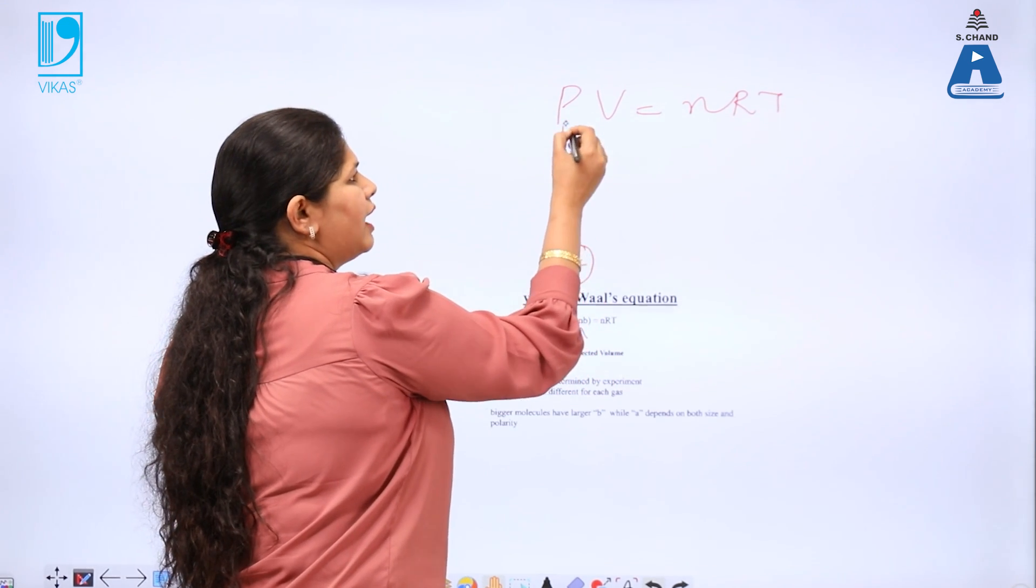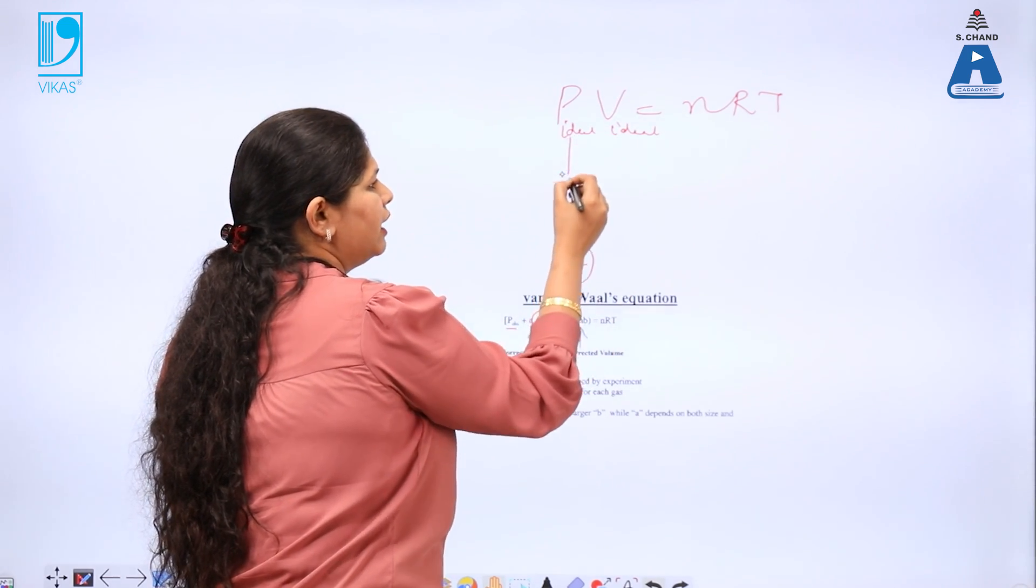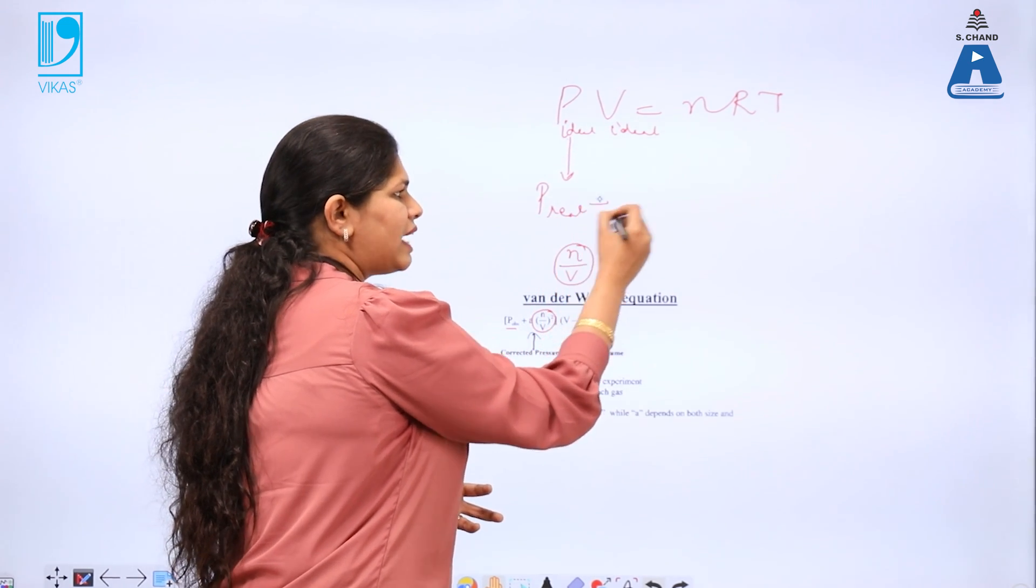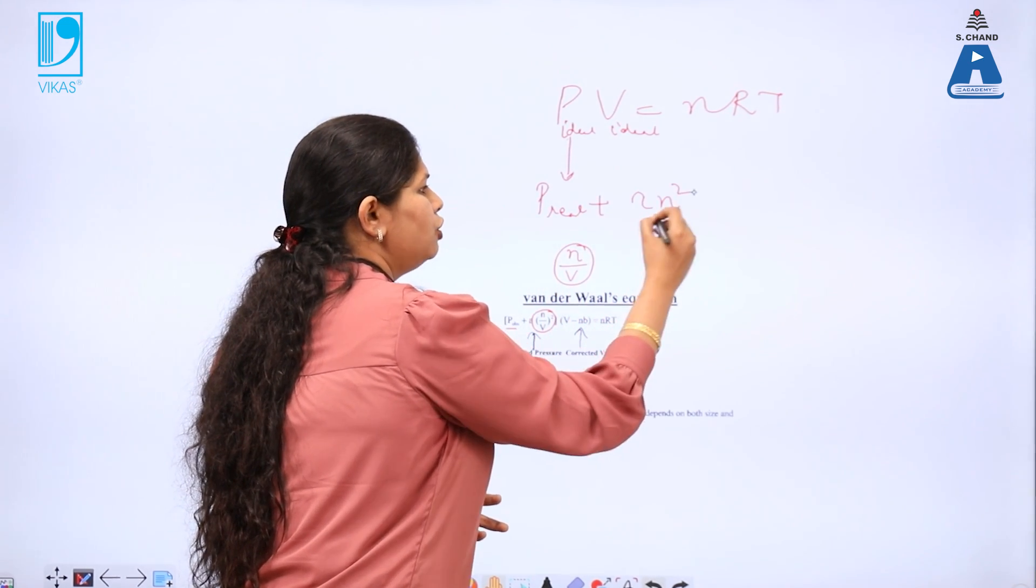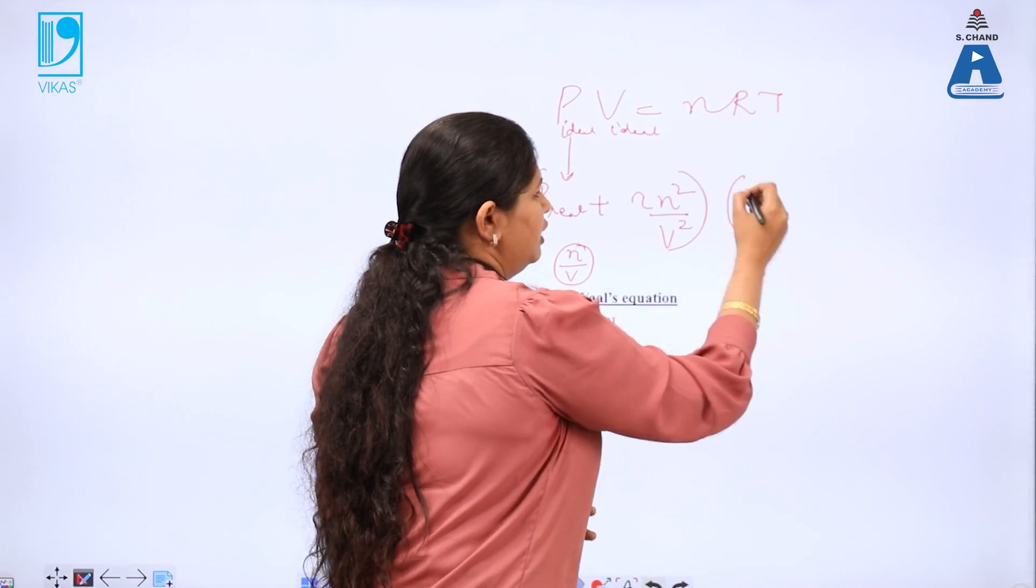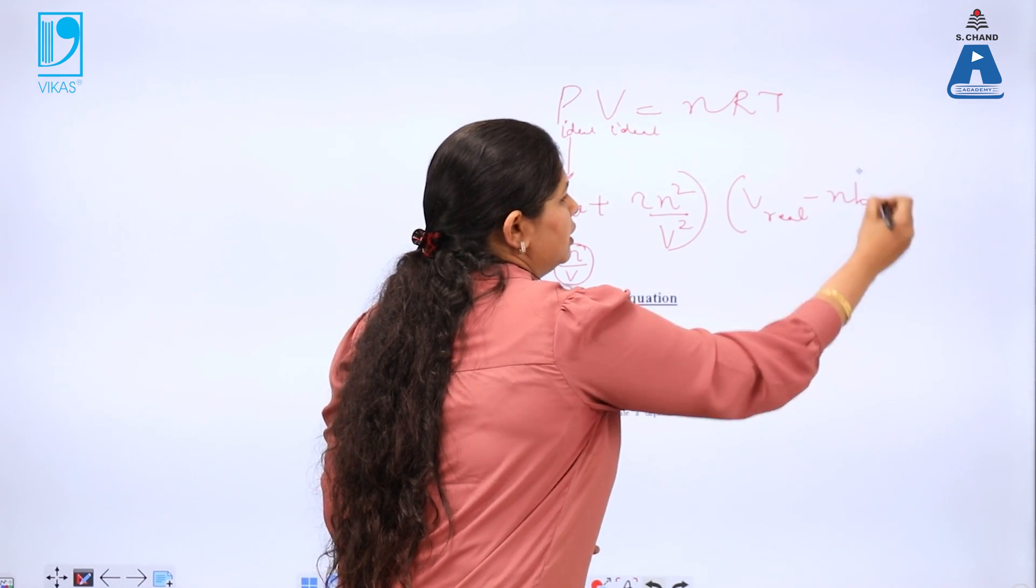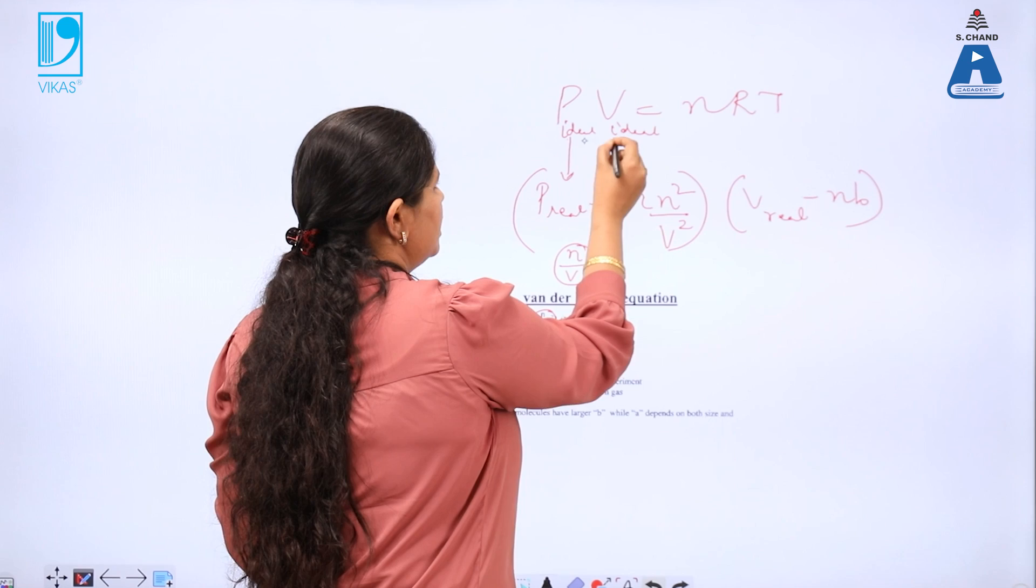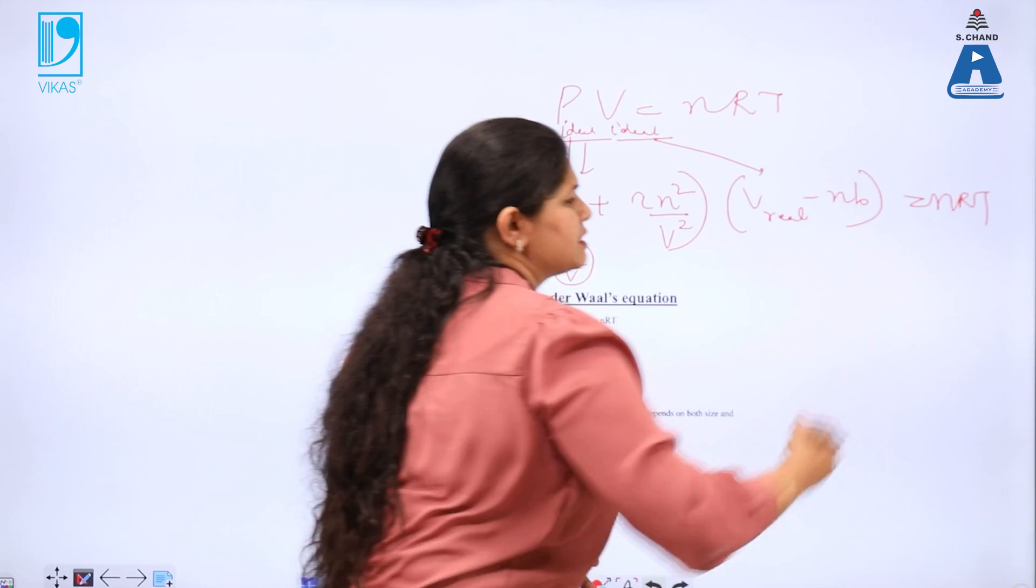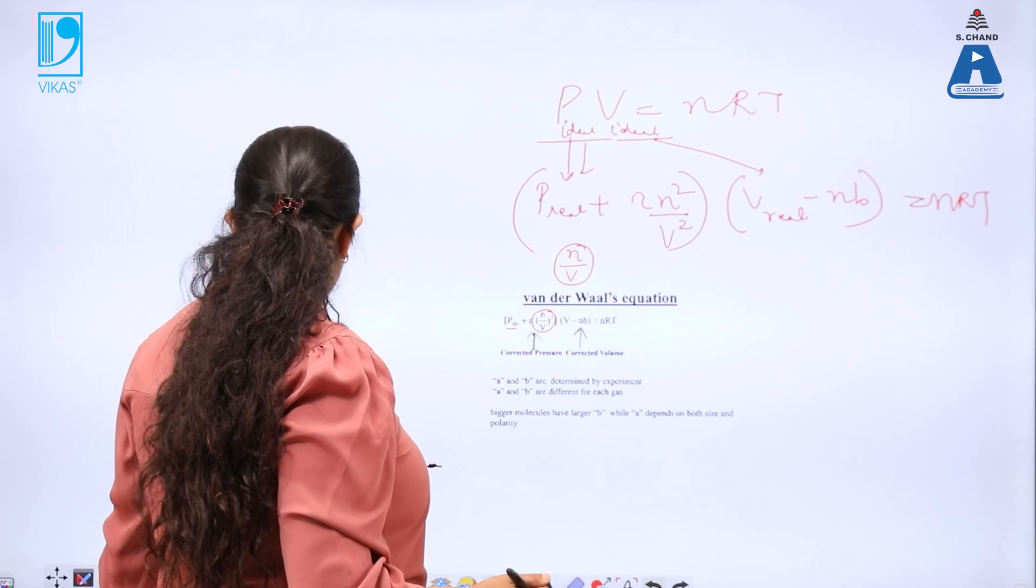In other words, we have just substituted in the ideal gas equation PV equal to NRT. This is my ideal pressure, this is my ideal volume. So for real gas, my pressure is P real plus that factor which is lost because of the intermolecular forces of attraction and V real minus the NB. That means these are equivalent to my P ideal, that is how we can substitute in the ideal gas equation and we can write down this as the Van der Waals equation of state.